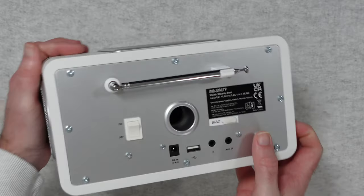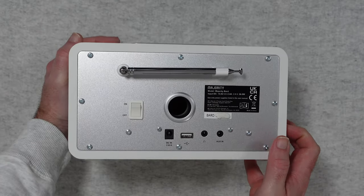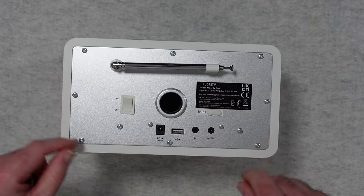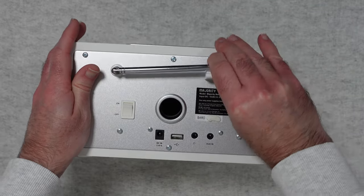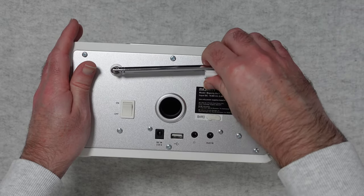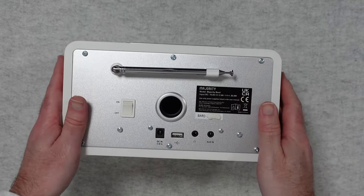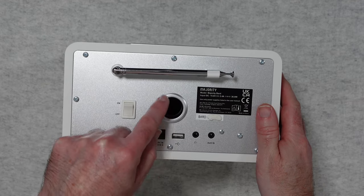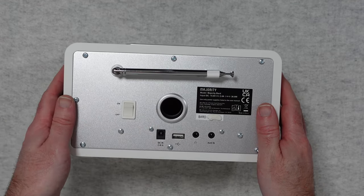And then round on the back we have got all of the various connections. So we have got an antenna which we can release like so and extend accordingly. So nice antenna, that's essential for DAB radio reception.